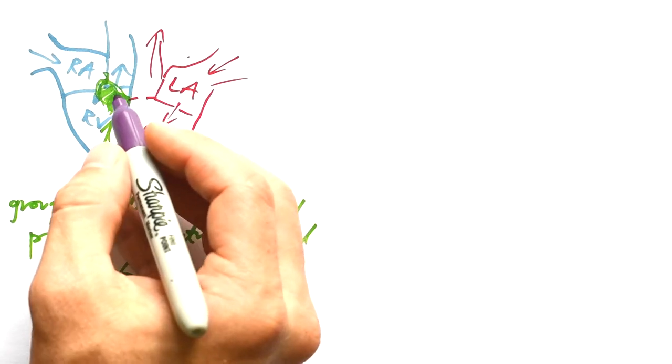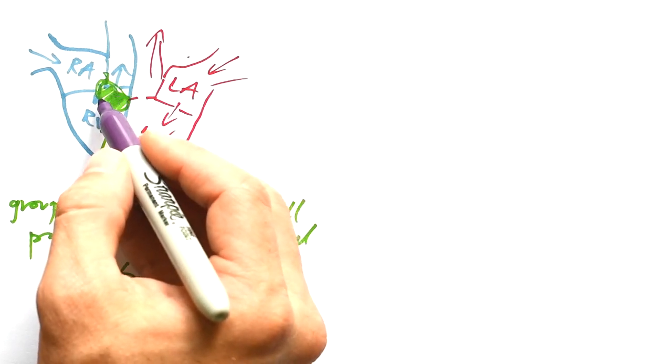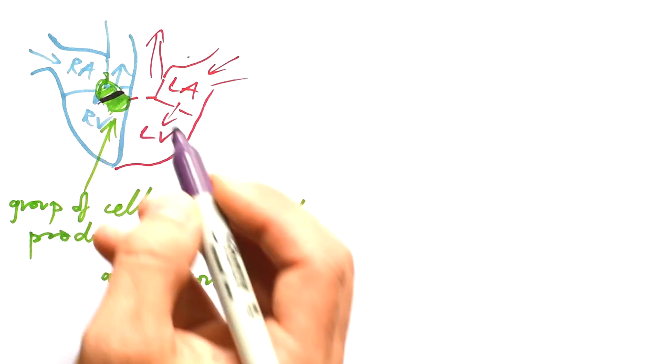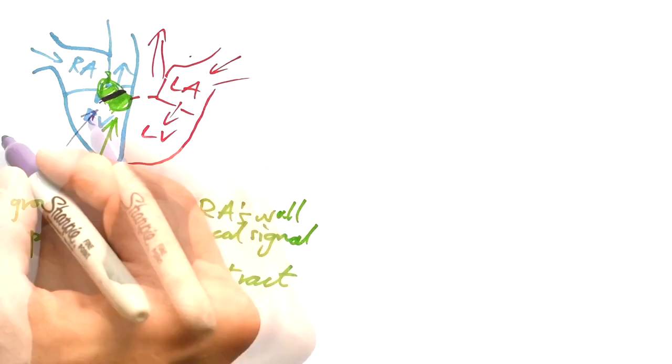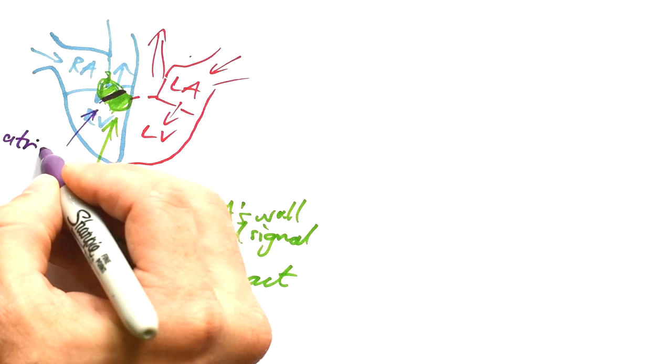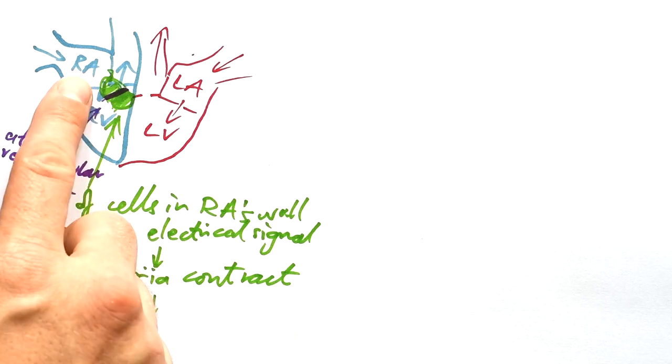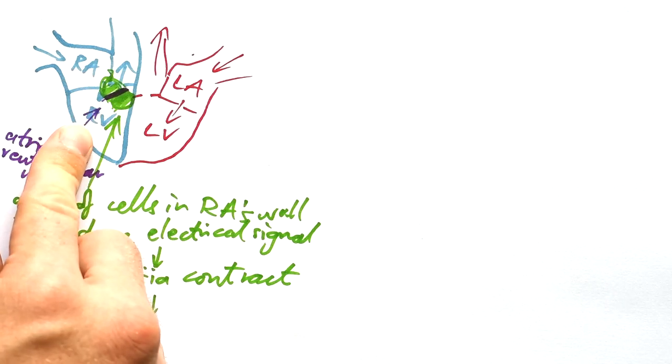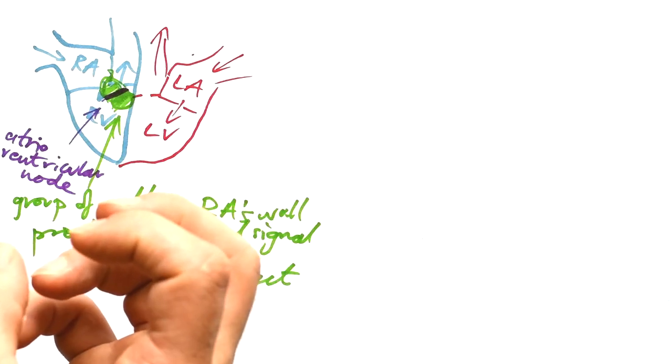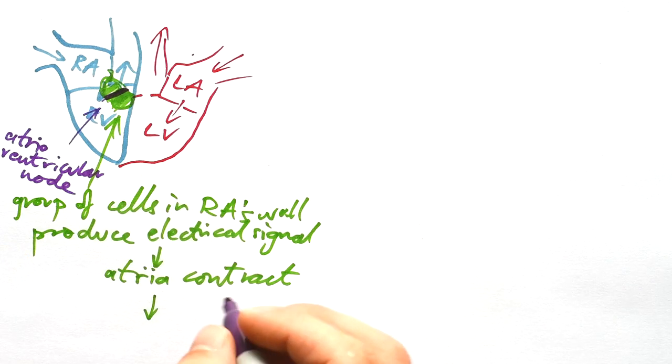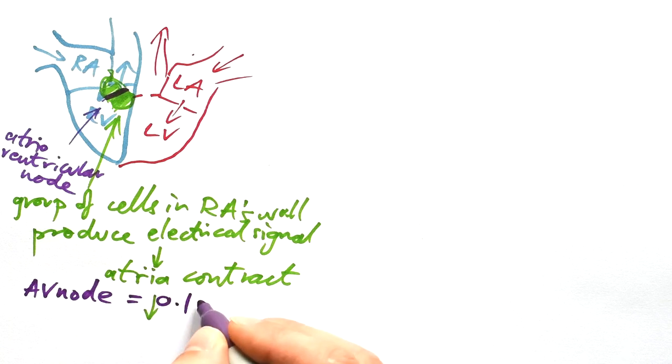Here's a clever bit. Between the atrium and the ventricle, there's another group of cells called the atrioventricular node. Now obviously we don't want all of the heart to contract in one go, because that would mean blood would not be able to go from the atria to the ventricles because the ventricle would be pushing back as well.